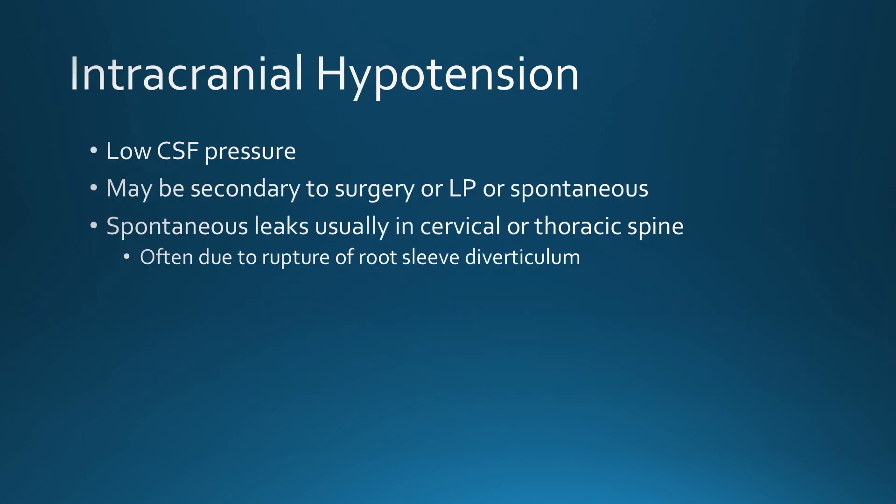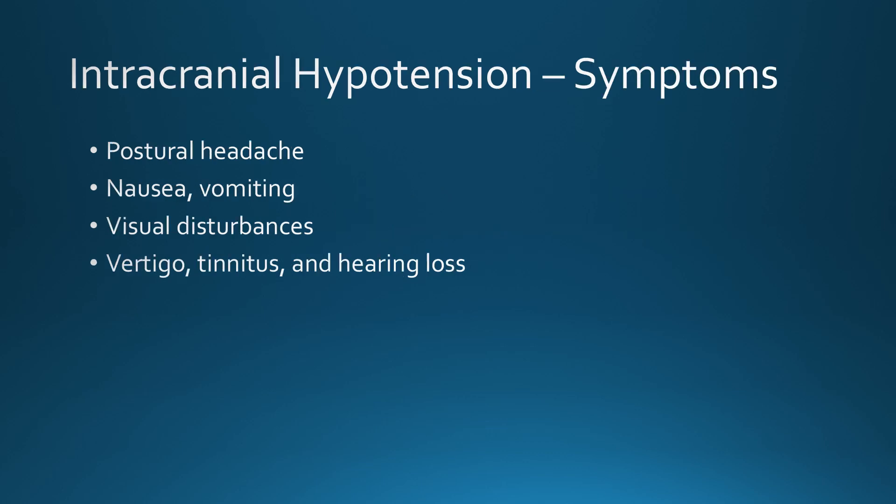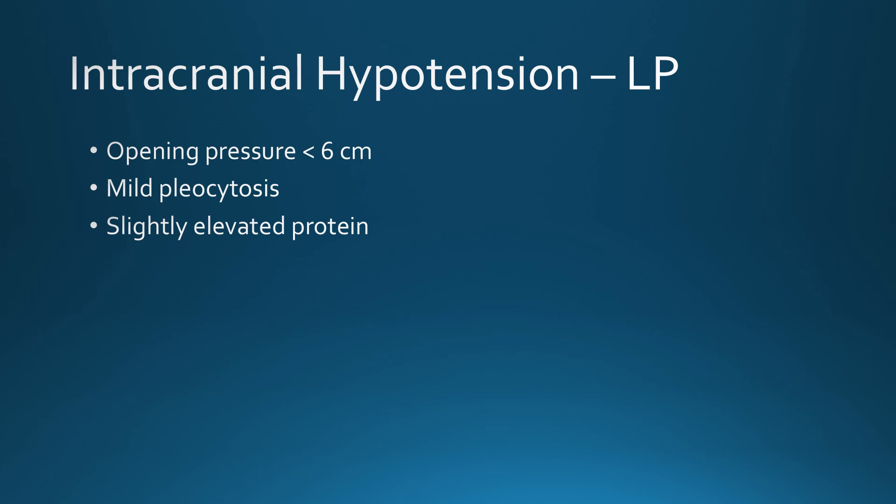Intracranial hypotension is caused by low CSF pressure. This can be secondary to surgery, a complication of lumbar puncture, or it can be spontaneous. Patients with spontaneous leaks are most commonly in the thoracic spine, less often in the cervical and lumbar. They can sometimes be due to rupture of a root sleeve diverticulum, or occasionally due to a herniated disc that tears through the dura. Many times we never figure out what the cause is. These patients present with postural headache, frequently with nausea, vomiting, visual disturbances, and hearing disturbances and vertigo. On lumbar puncture, the opening pressure is usually low — usually less than six, but not always.